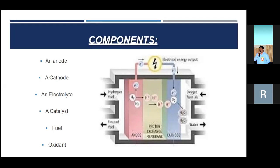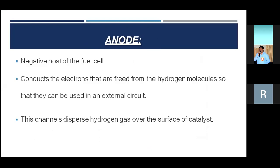Now we are going to know about anode. Anode is the negative post of the fuel cell. It conducts the electrons that are freed from the hydrogen molecules so that they can be used in an external unit. If we conduct the electrons, the passing of current is known as the flow of electrons. Using the anode, we can pass the current, and this channel disperses hydrogen over the surface of the catalyst.